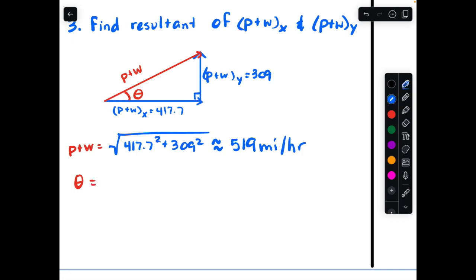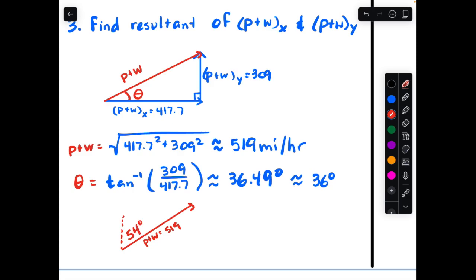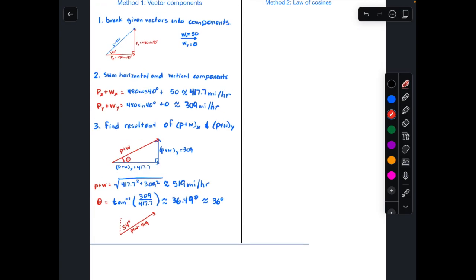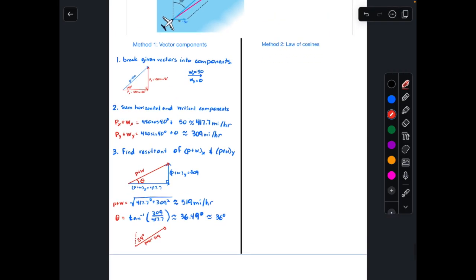Now direction. A lot of different ways I can do this. I have three sides of a right triangle. I'm going to do inverse tangent. It's 36.49 degrees. I think we're going to call that 36 degrees. Now be careful, that is not a bearing. So P plus W is 519 miles per hour at an angle of 90 minus that answer. I get 54 degrees. Method one, vector components.